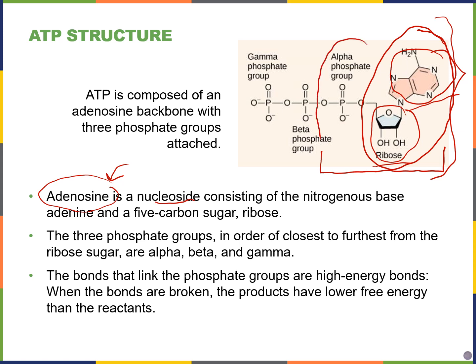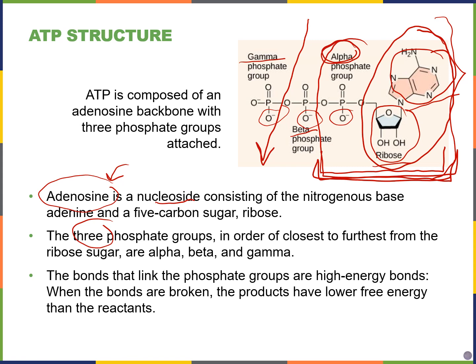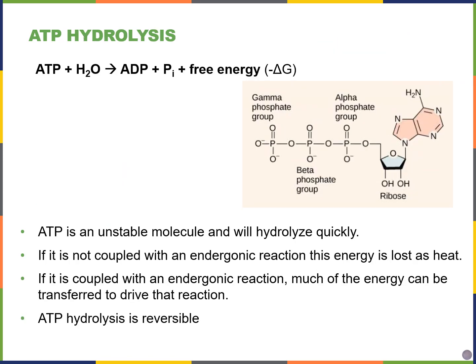If I add one phosphate group, this would be called a nucleotide. But adenosine triphosphate has three phosphate groups, labeled in order: the one closest to the nucleoside is called the alpha phosphate group, then we have the beta in the middle, and at the end the gamma phosphate group. Because these phosphate groups are negatively charged, they really don't want to be together, and there's a lot of potential energy in the bonds connecting the three phosphate groups, making the molecule fairly unstable.